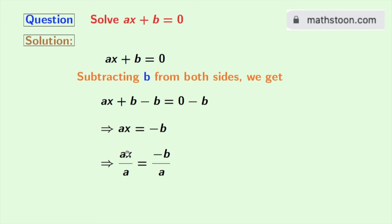In the left hand side, a gets cancelled and we are left with x. And in the right hand side, we have minus b by a. So, this is our final answer.